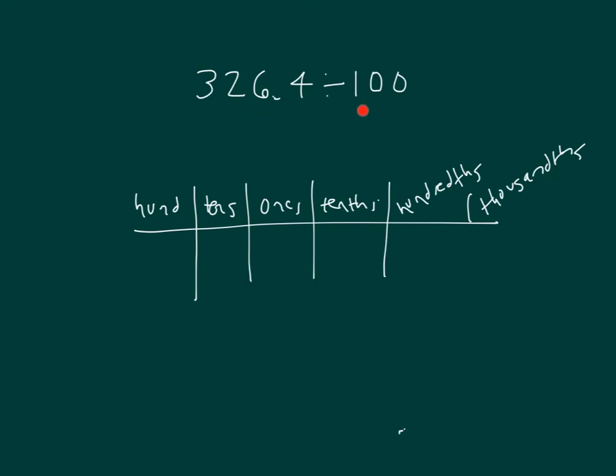Here we have 326.4 divided by 100. Place it into our place value chart. And let's see what we do. We divide by 100. So each of our numbers is getting smaller, smaller by 100.